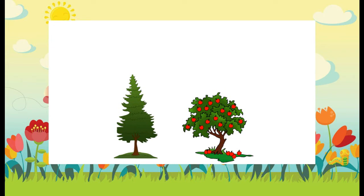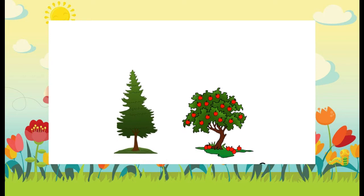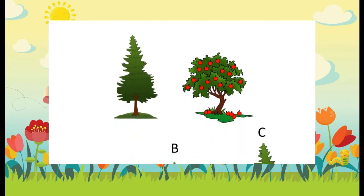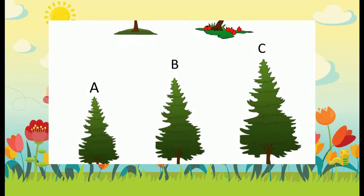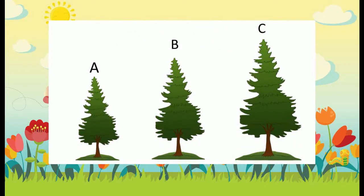The first one is a pine tree and the second one is an apple tree. Then let's compare these two trees — which one of them is the short one? Yes, that's right! The short one is the apple tree and the tall one is the pine tree. Excellent!